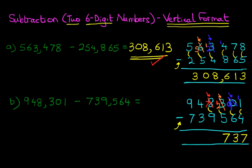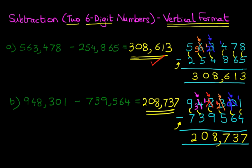Now we do the thousands: seven minus nine. Seven is smaller than nine, so we take one from the digit to its left. Cross out the four — four minus one is three — and move it across, so the thousands column now reads seventeen minus nine, which is eight. On to the ten-thousands: three minus three is zero. Lastly the hundred-thousands: nine minus seven is two. The answer is two hundred and eight thousand seven hundred and thirty-seven.